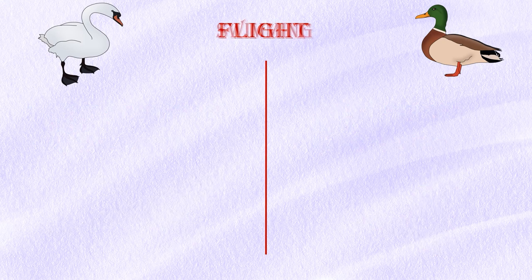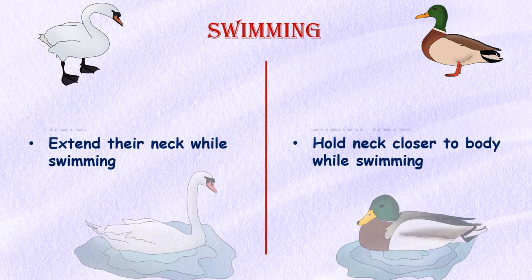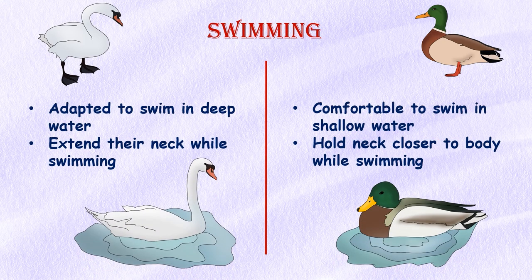Swimming: Swans are better adapted for swimming in deeper water, while ducks are more comfortable in shallower water. Another interesting fact is that swans typically swim with their necks extended, while ducks swim with their necks held closer to their bodies.